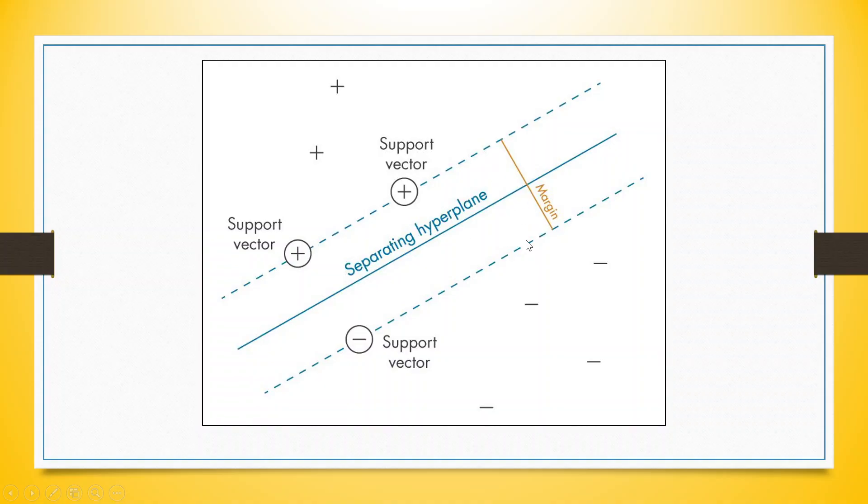The distance between the two points, that is plus and minus, this distance is known as margin. And the points which are considered to draw the hyperplane are known as the support vectors.